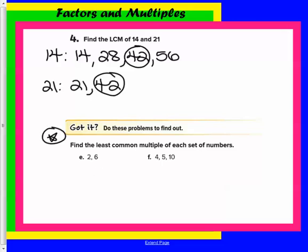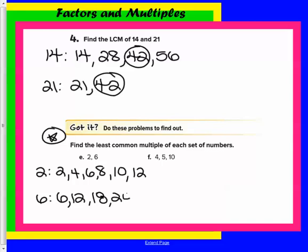All right, you try these, and I'll be back in just a second to show you what I did. Start by listing some of the multiples: 2, 4, 6, 8, 10, 12, and so on. For 6, it's 6, 12, 18, 24, 32. Make sure you're checking your work with a red pen. So the common are 6 and 12, but 6 is the least common.